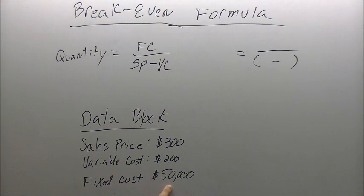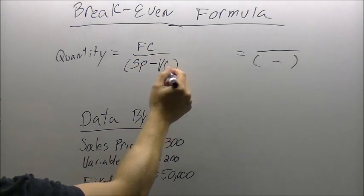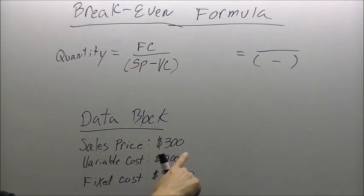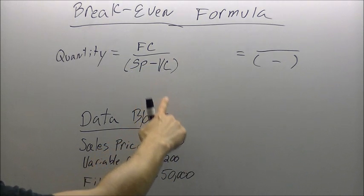our fixed cost is $50,000, divided by our sales price which is $300 minus our variable cost which is $200.